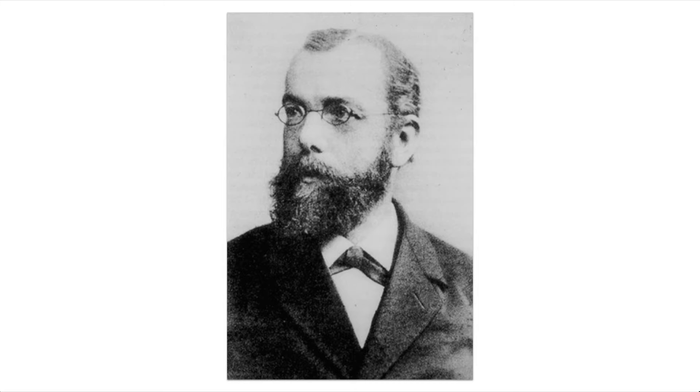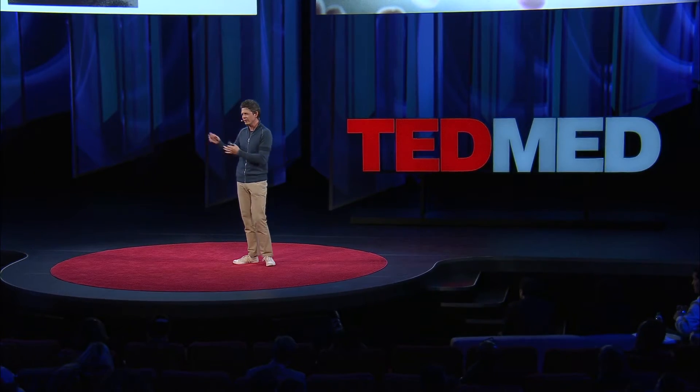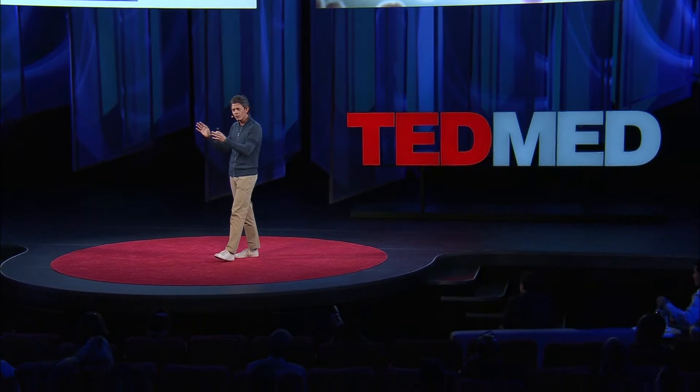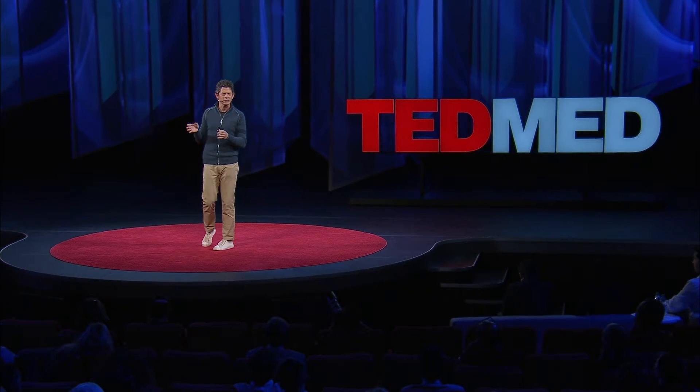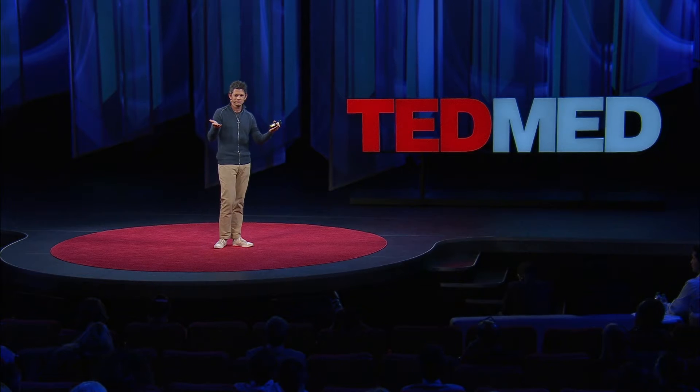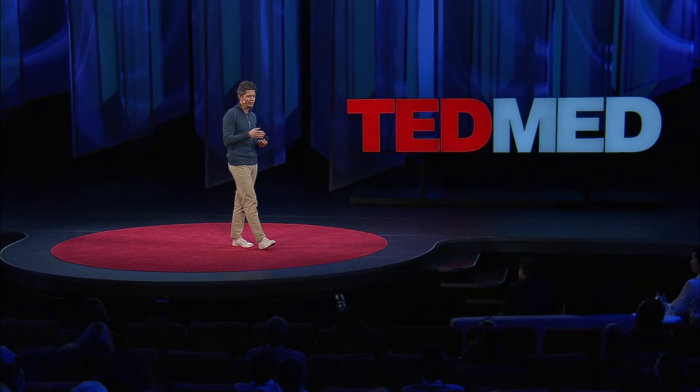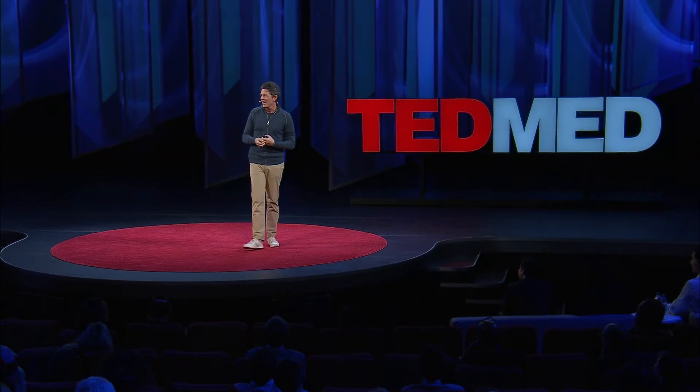So let's go back to Koch. Koch was an anonymous doctor — a wannabe. He had great ambition; he thought he could be something. He lived in a small town in eastern Germany called Volstein, and when his wife had squirreled away a few deutschmarks, she offered to buy him a carriage so he could better visit his patients, or a microscope. And he chose the microscope. So he chose the microscope, and then one day a police officer knocked on his door and brought him the carcass of a dead sheep.